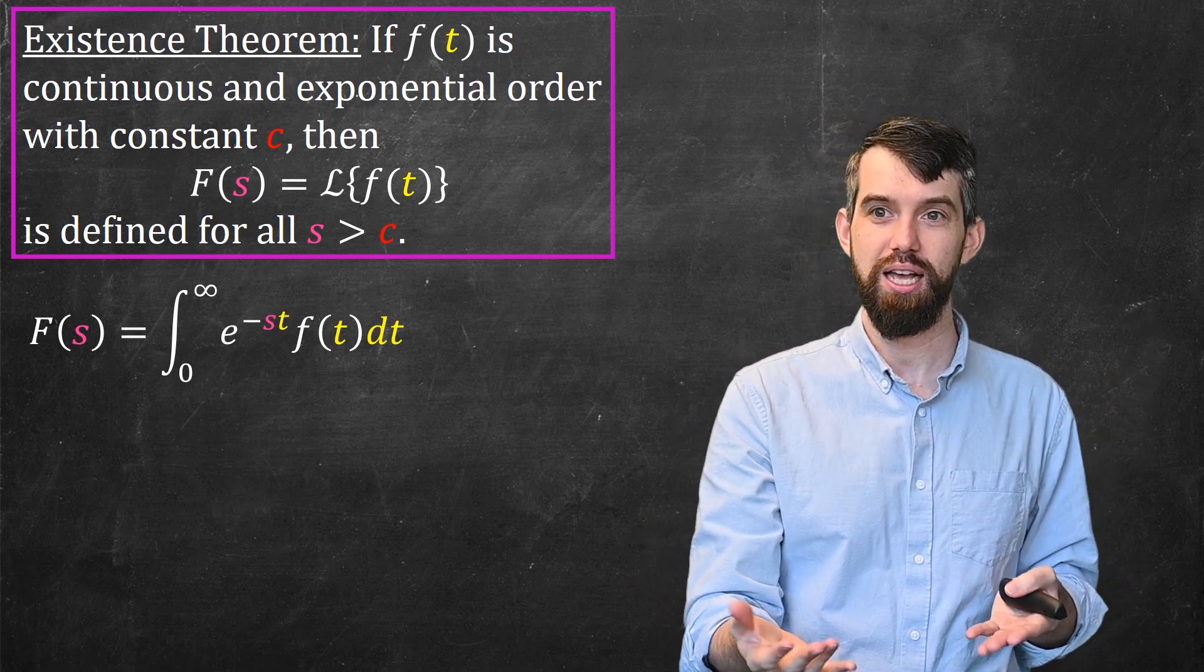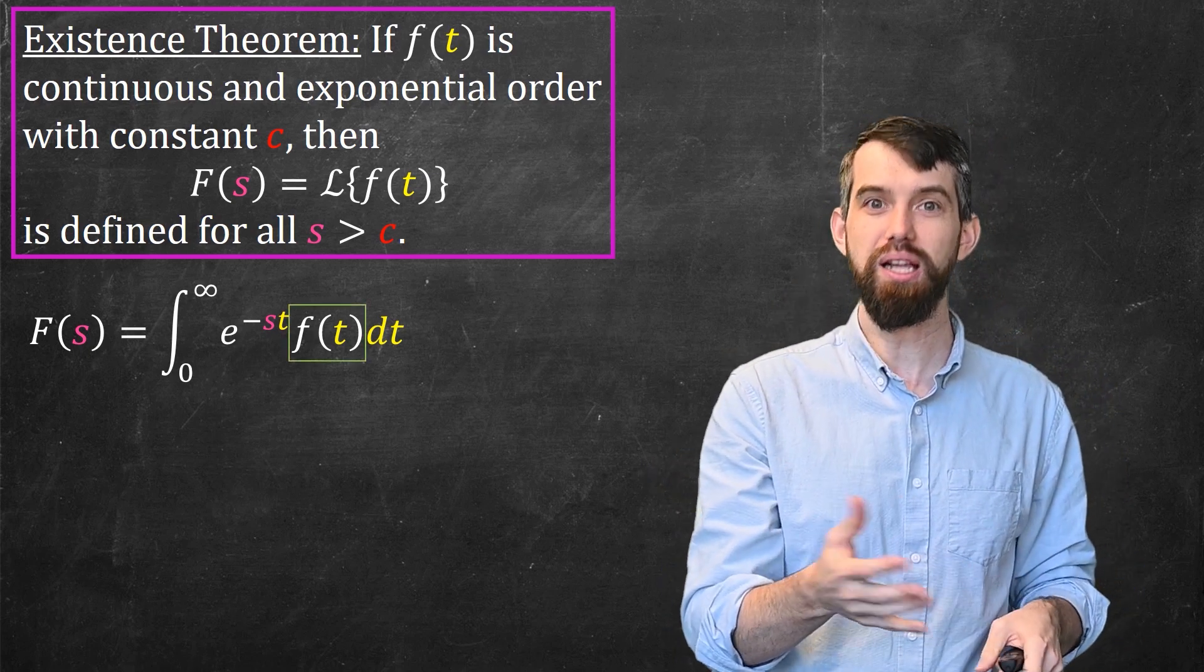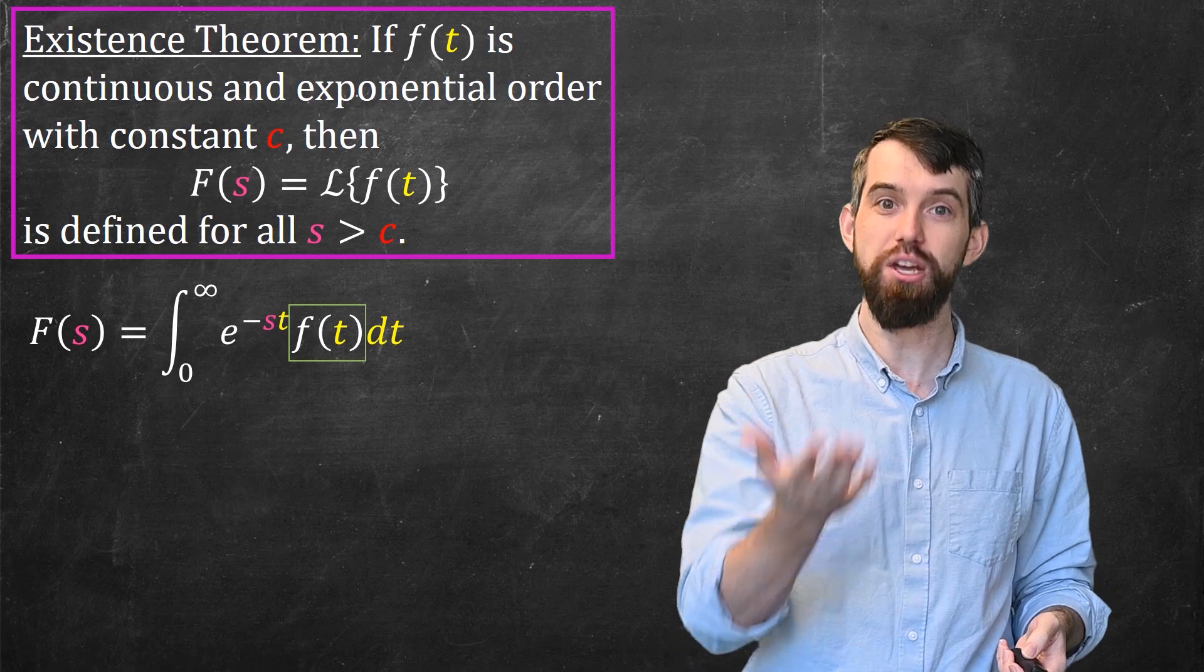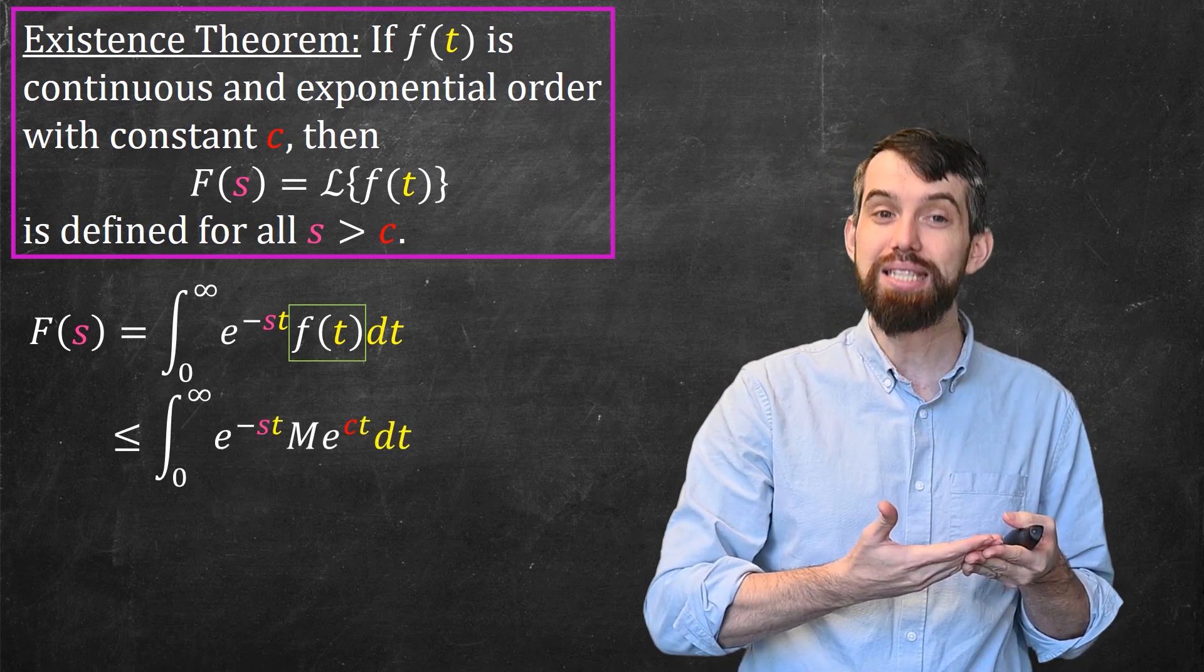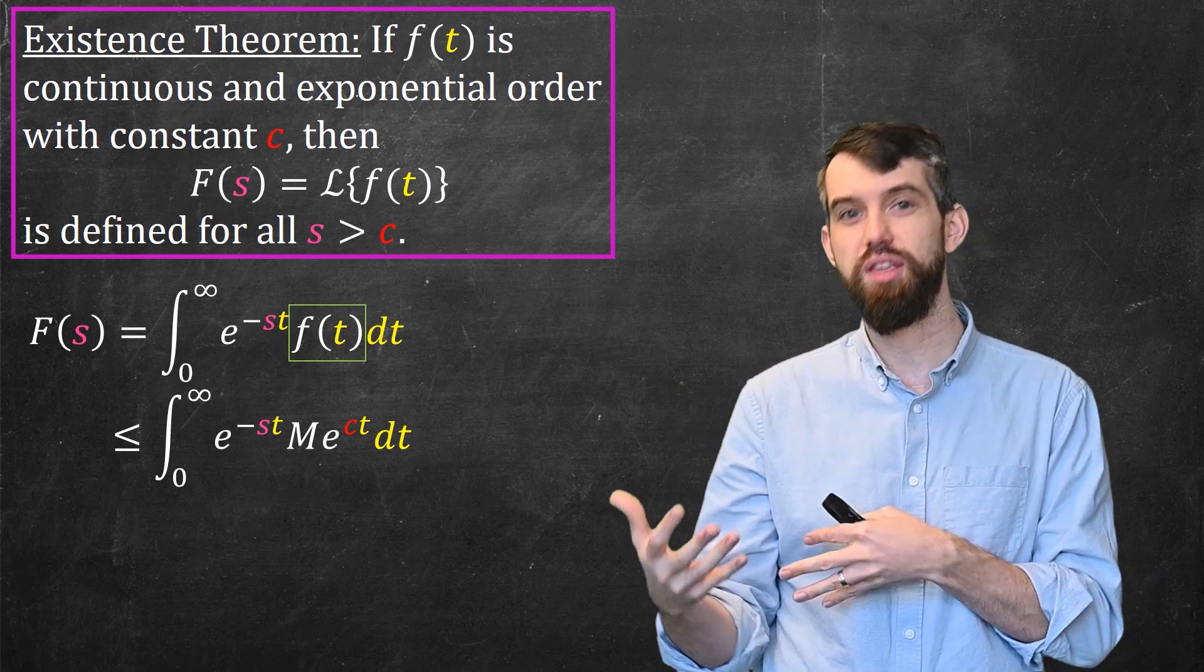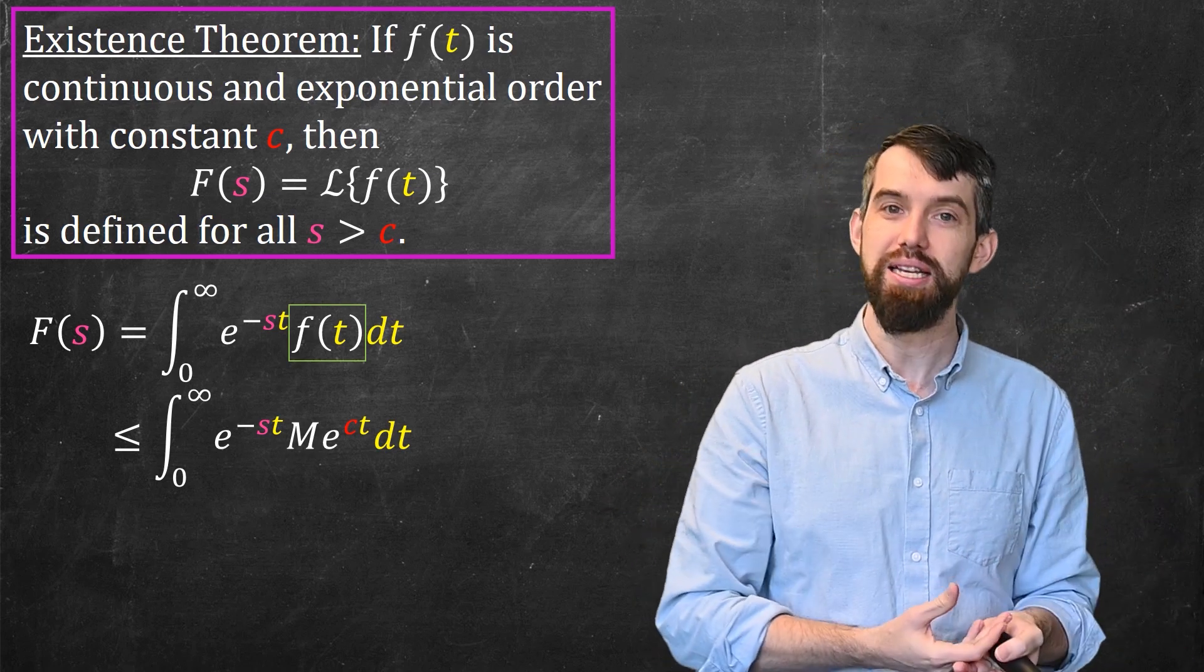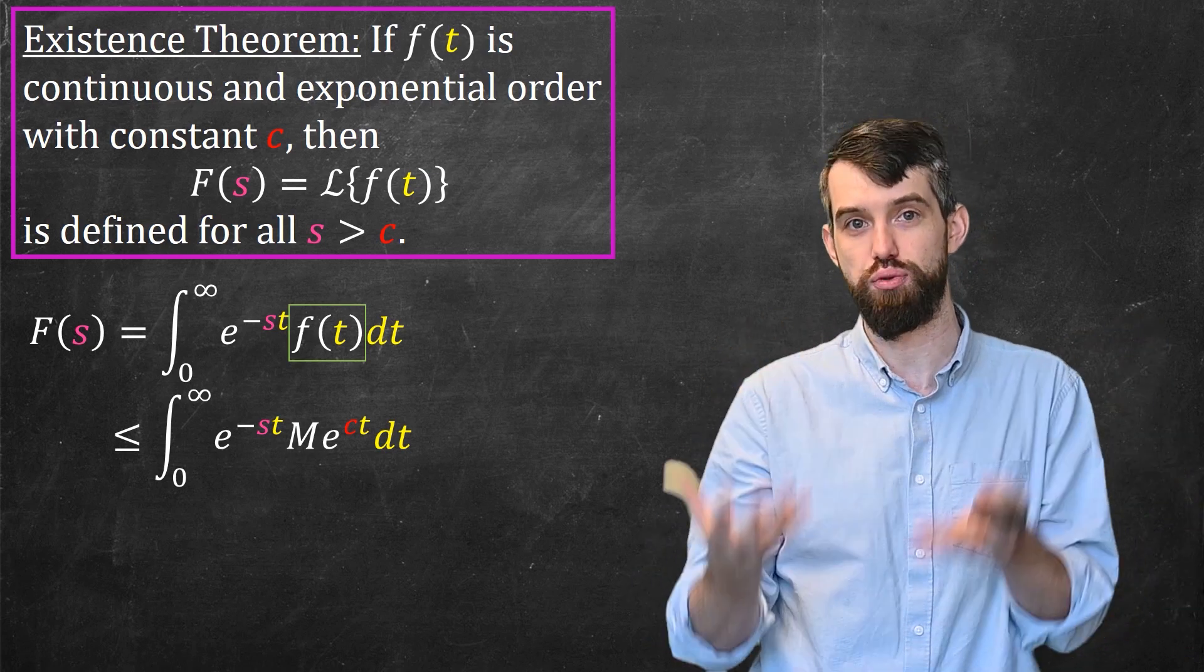Let's see how the proof works. If I focus in precisely on that f(t), then the claim is that because it's of exponential order, I can replace that with an inequality. The f(t) is going to be less than Me^(ct). Indeed, we're using a theorem from first-year calculus that says if you have an inequality of the integrand, you get an inequality of the improper integrals.